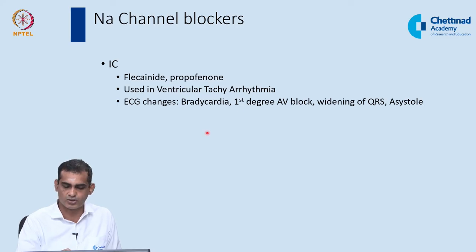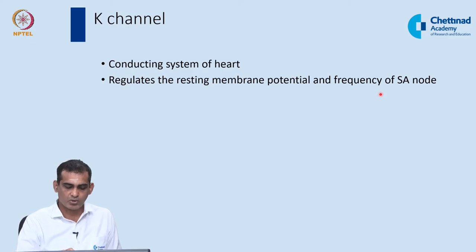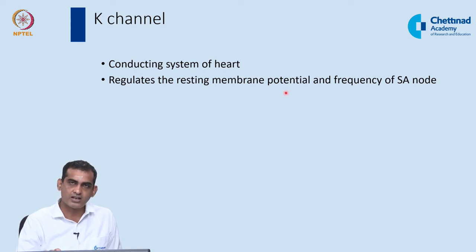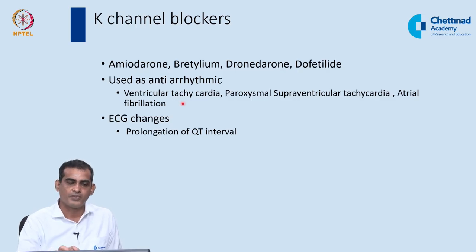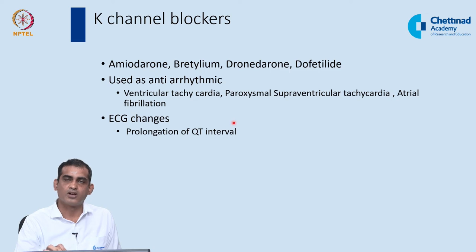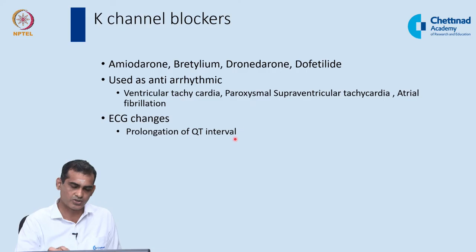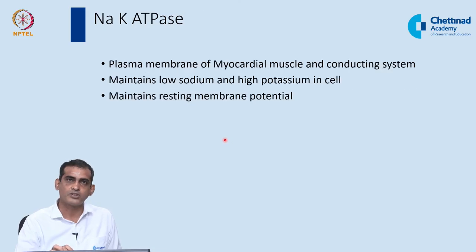Potassium channels, present mainly in the conducting system, regulate resting membrane potential and SA node frequency, thereby controlling heart rate. Potassium channel blockers — amiodarone, bretylium, and dofetilide — are used as antiarrhythmics. Amiodarone is the broadest-spectrum antiarrhythmic, used in ventricular tachycardia, paroxysmal supraventricular tachycardia, and atrial fibrillation. These drugs prolong the QT/QTc interval, which can lead to polymorphic ventricular tachycardia, also known as torsades de pointes.